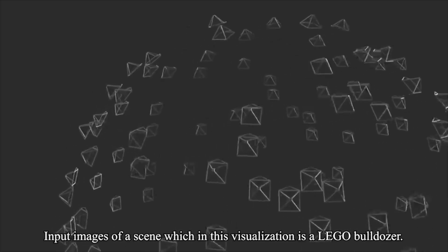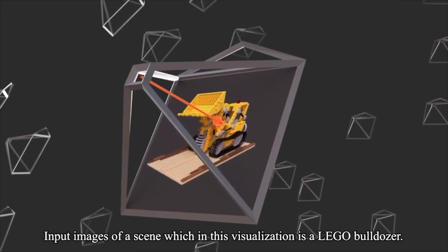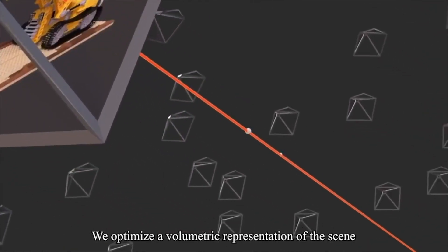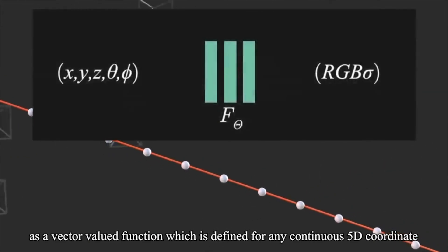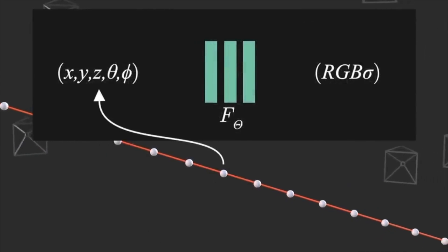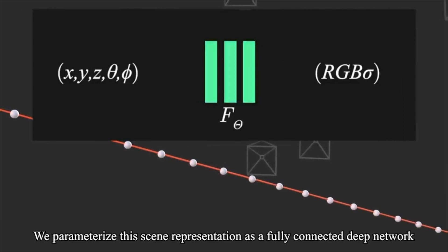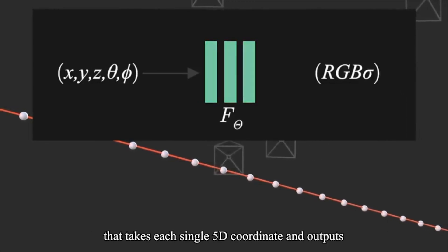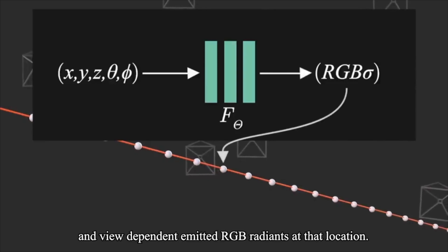Now let's take a look at how Nerf works. Input images of a scene, which in this visualization is a Lego bulldozer. We optimize a volumetric representation of the scene as a vector-valued function, which is defined for any continuous 5D coordinate, consisting of a location and view direction. We parameterize this scene representation as a fully connected deep network that takes each single 5D coordinate and outputs the corresponding volume density and view-dependent emitted RGB radiance at that location.